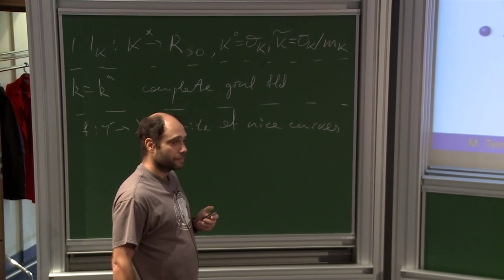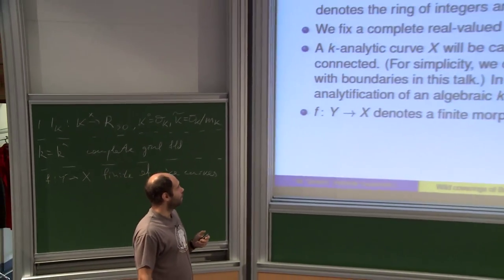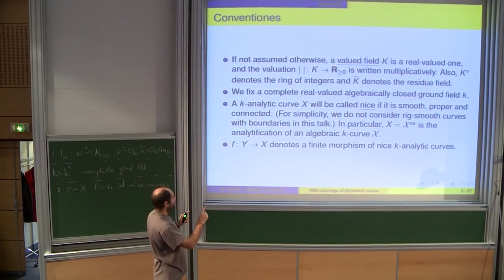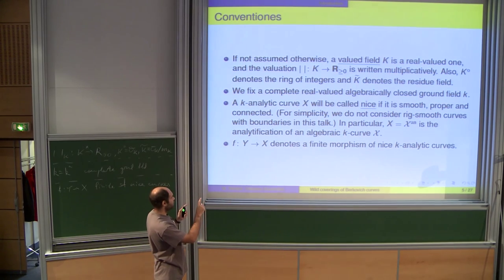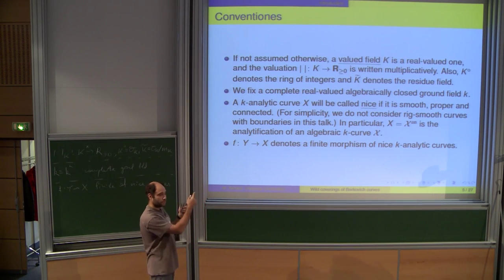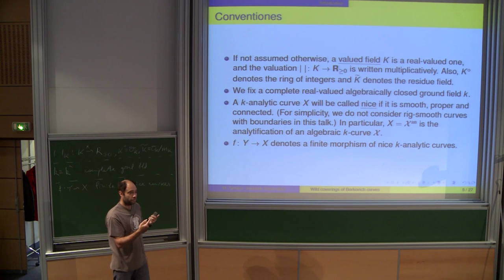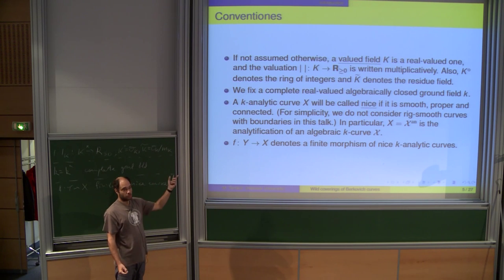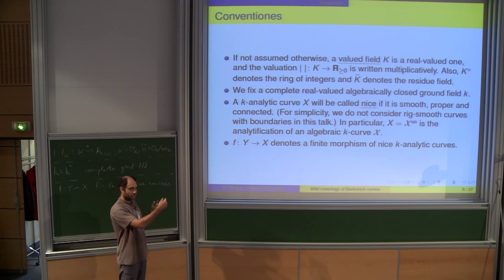In particular, under these assumptions, a nice curve is always an analytification. It is always a nullification of the Berkovich curve.